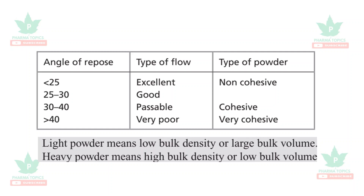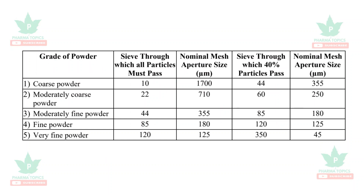From this slide you can see the grades of powder. There are five different grades: coarse powder, moderately coarse powder, moderately fine powder, fine powder, and very fine powder. For each grade, all the powder should flow completely through the specified sieve. Coarse powder passes completely through sieve number 10, moderately coarse through sieve 22, and moderately fine through sieve 44.